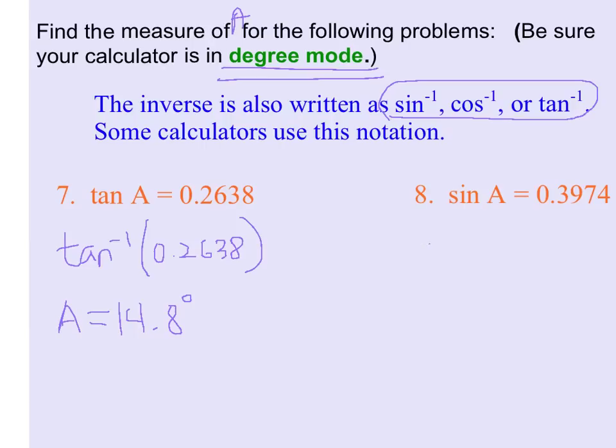In number eight, we are going to do the inverse sine of 0.3974. And that's going to give us the angle measure for A, which in this case is 23.4 degrees.